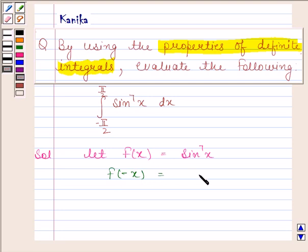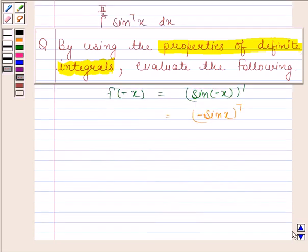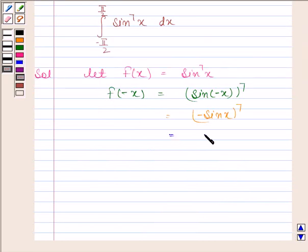f(-x) = (sin(-x))^7 = (-sin x)^7 = -sin^7(x) = -f(x).